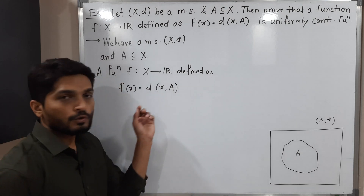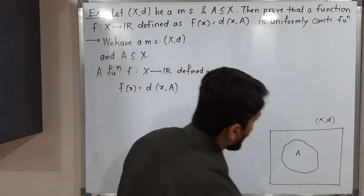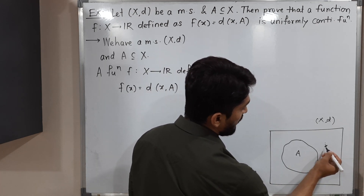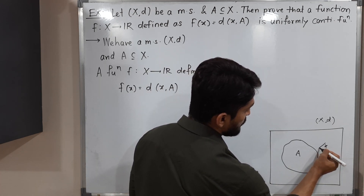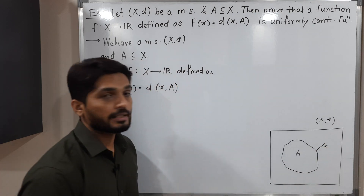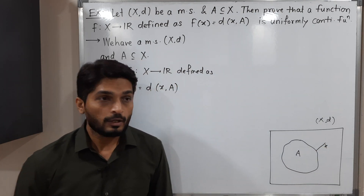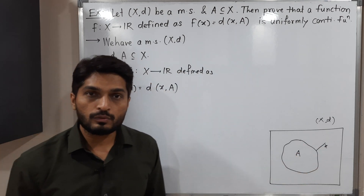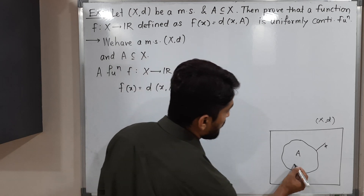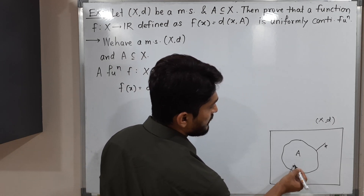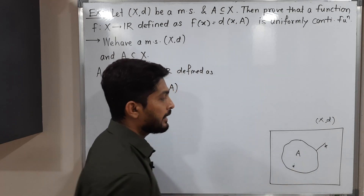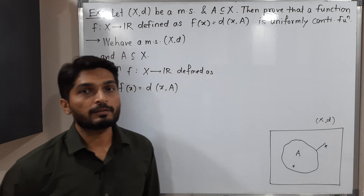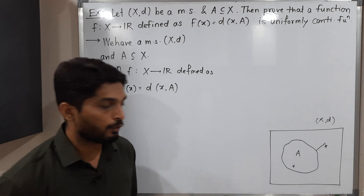That means the distance of x from A. If you take any point x and operate f on it, you will get the distance of that point from set A. If x lies inside A, then the distance of x from A is 0, since x lies inside set A. In this way the function f is defined, and we have to prove that it is uniformly continuous.